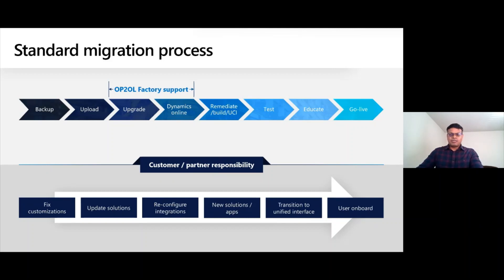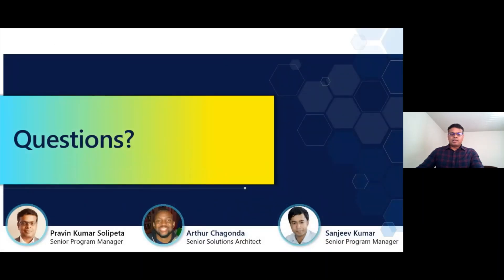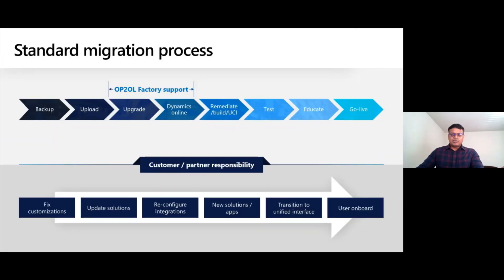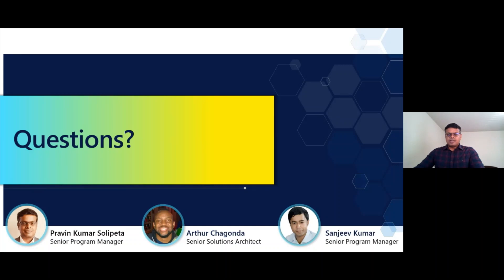Once the validation is complete and everything is working fine, you reach out to your users and call the environment a go-live. Looking at the partner and customer responsibility shown below — those are the things you should be doing on your end. The factory team can provide guidance in these areas, but it's completely the customer and partner's responsibility to own and complete those steps. The scope of work the factory team helps with is lifting and shifting your database and converting it into the version you'd like to use in the online environment. That's the process in a nutshell — start asking your questions and we're happy to answer.